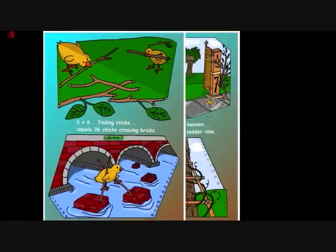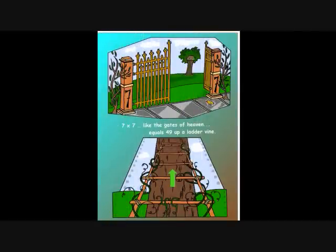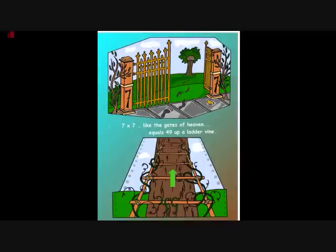And on the other side of the tunnel, the chicks showed the children a beautiful gate — the gates of heaven, they said. But they explained they could not go any further; the children would have to go by themselves. And of course, they did. Using their hands and their feet — all four — they climbed up the nine rungs to the top of the ladder vine. Seven times seven, like the gates of heaven, equals forty-nine on the ladder vine.